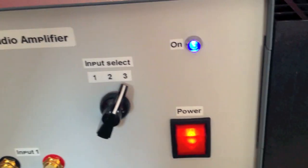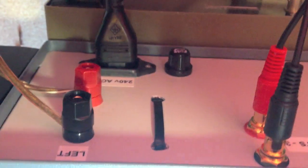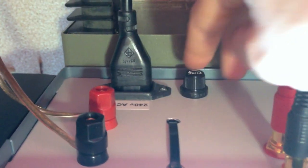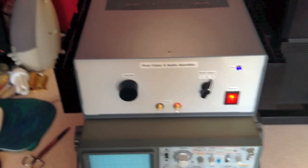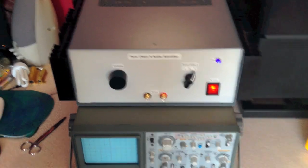The output transistors are mounted on the sides. Around the rear we've got 240 volt AC mains input, mains fuse, left channel inputs two and three on the rear, and the right channel. Let's take a look inside.